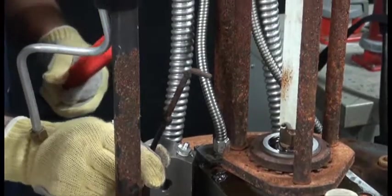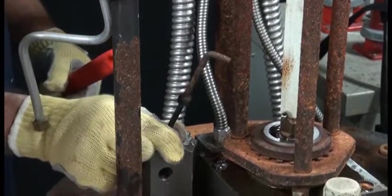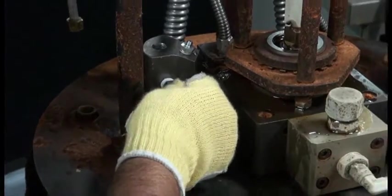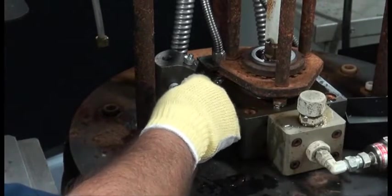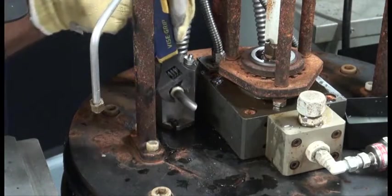This is the purge valve handle that you'll be replacing. Place Teflon tape on the threads then reinstall the purge spout into the purge block.